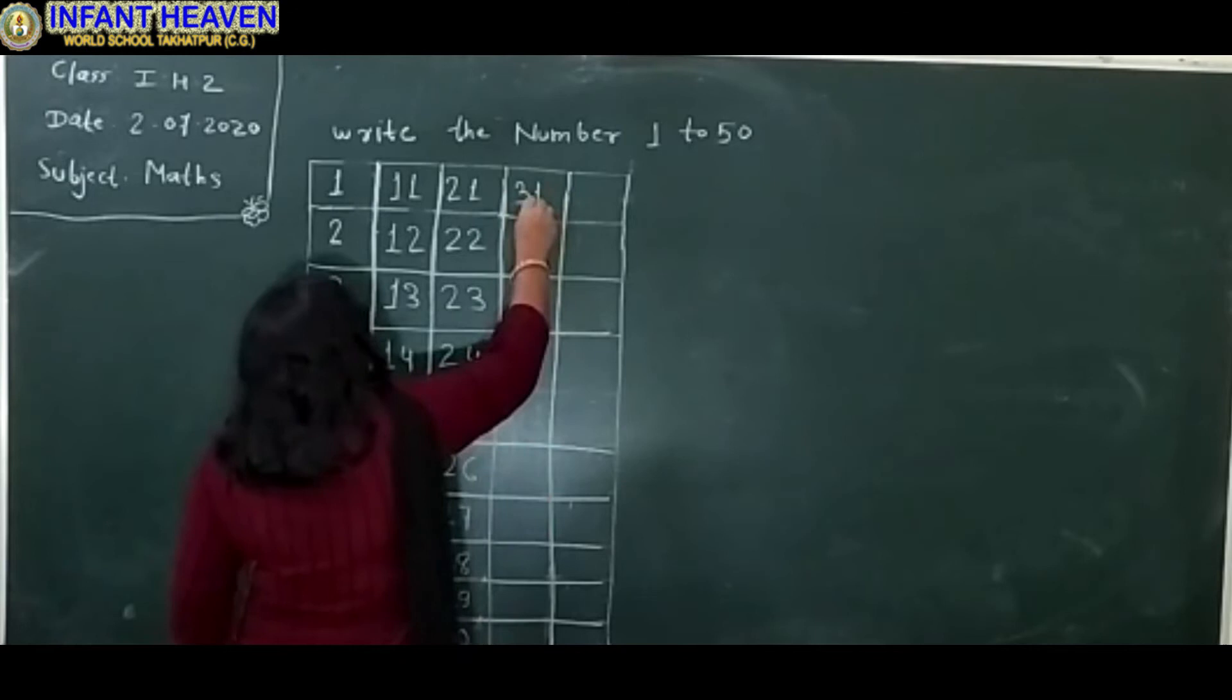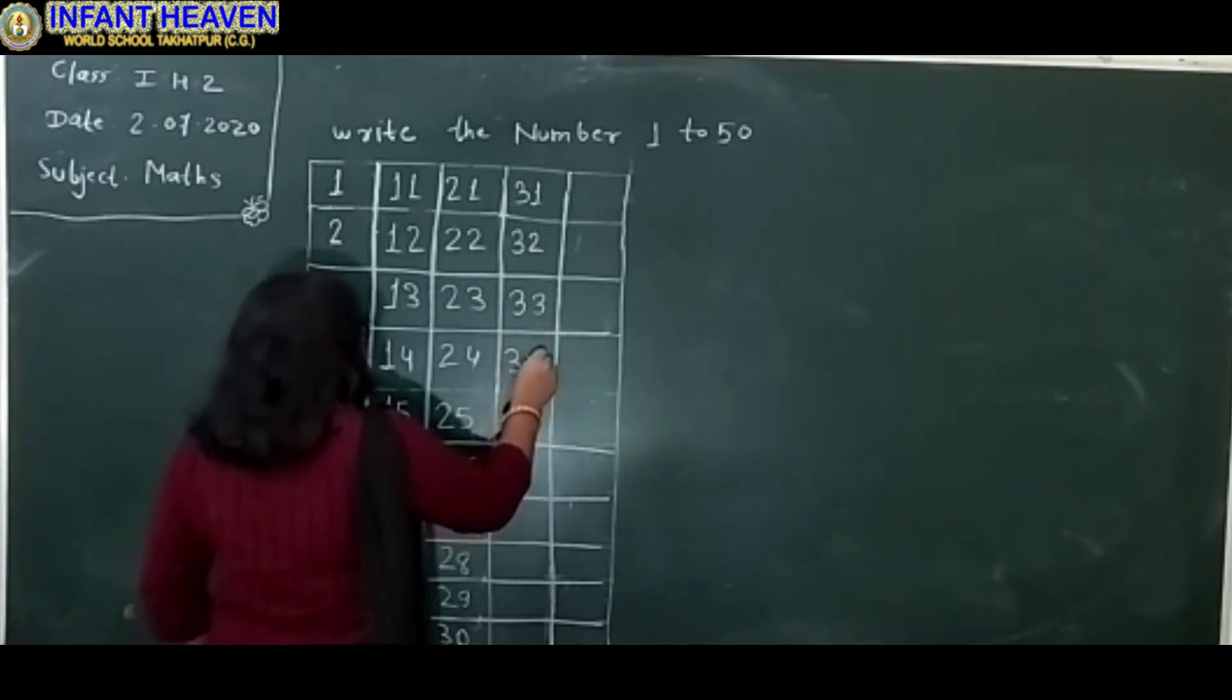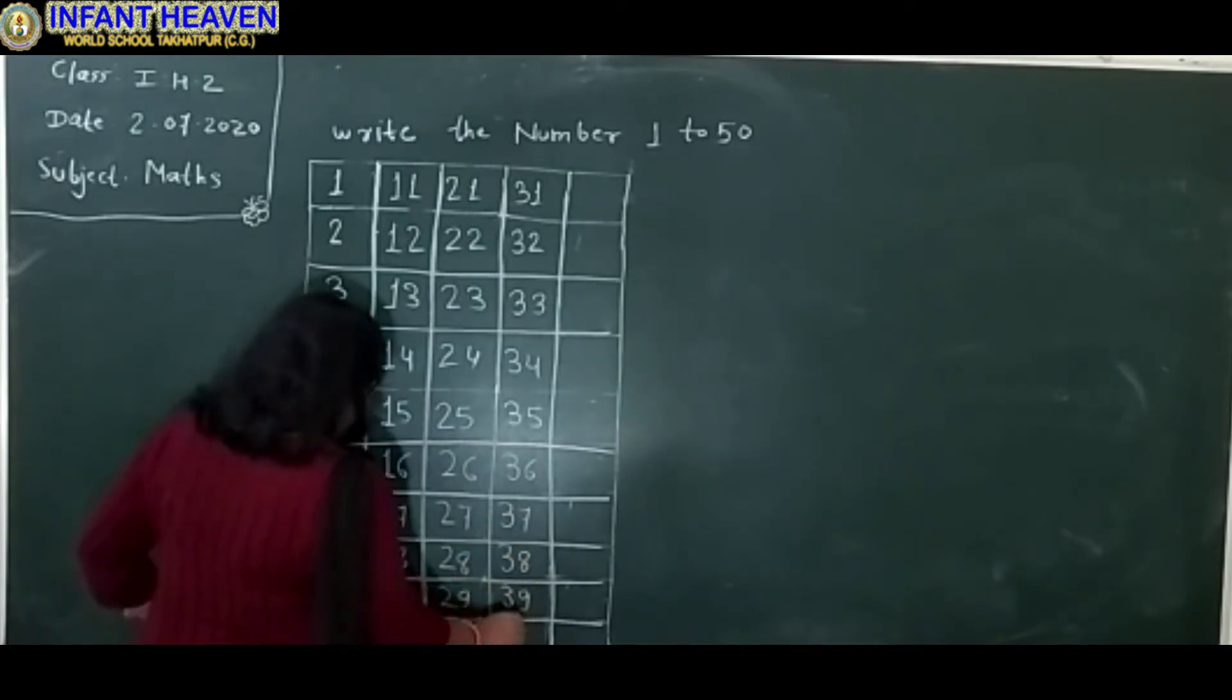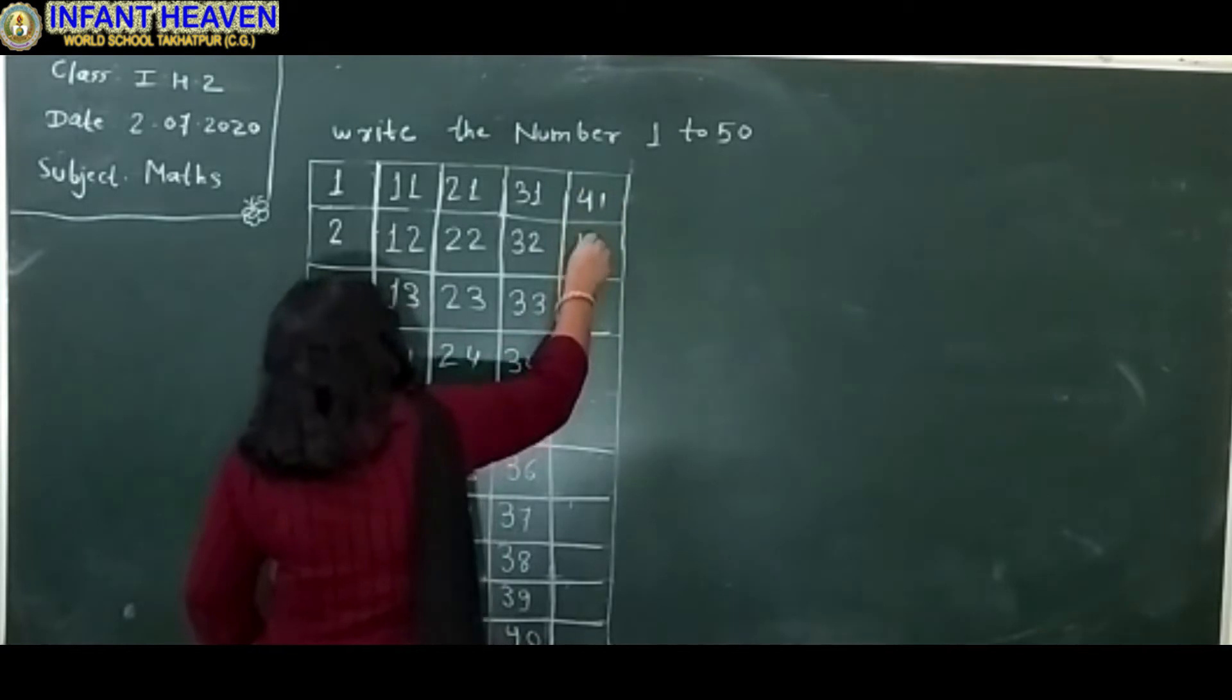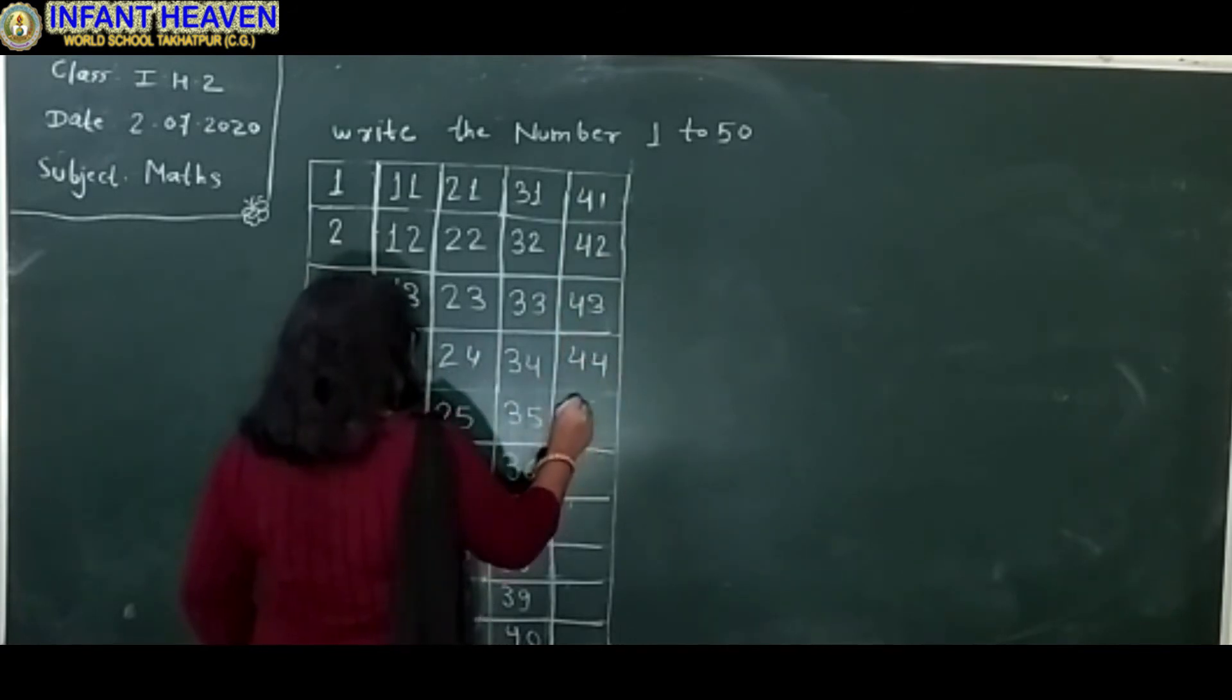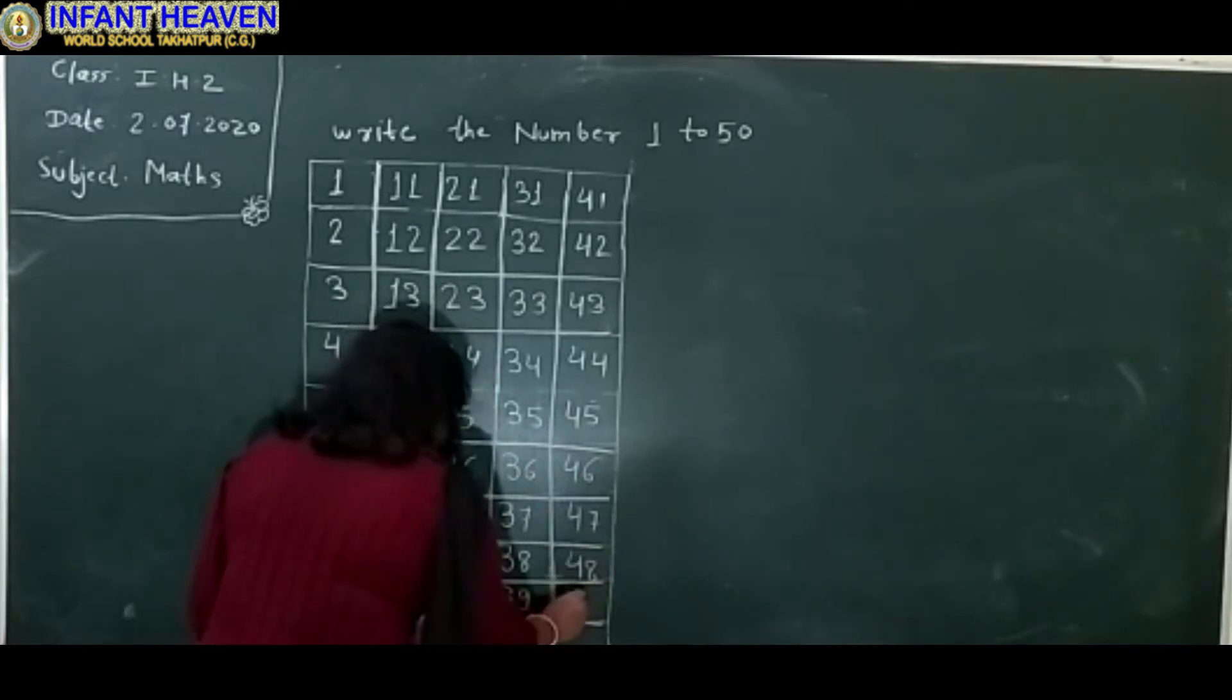31, 32, 33, 34, 35, 36, 37, 38, 39, 49, 40, 41, 42, 43, 44, 45, 46, 47, 48, 49, 50.